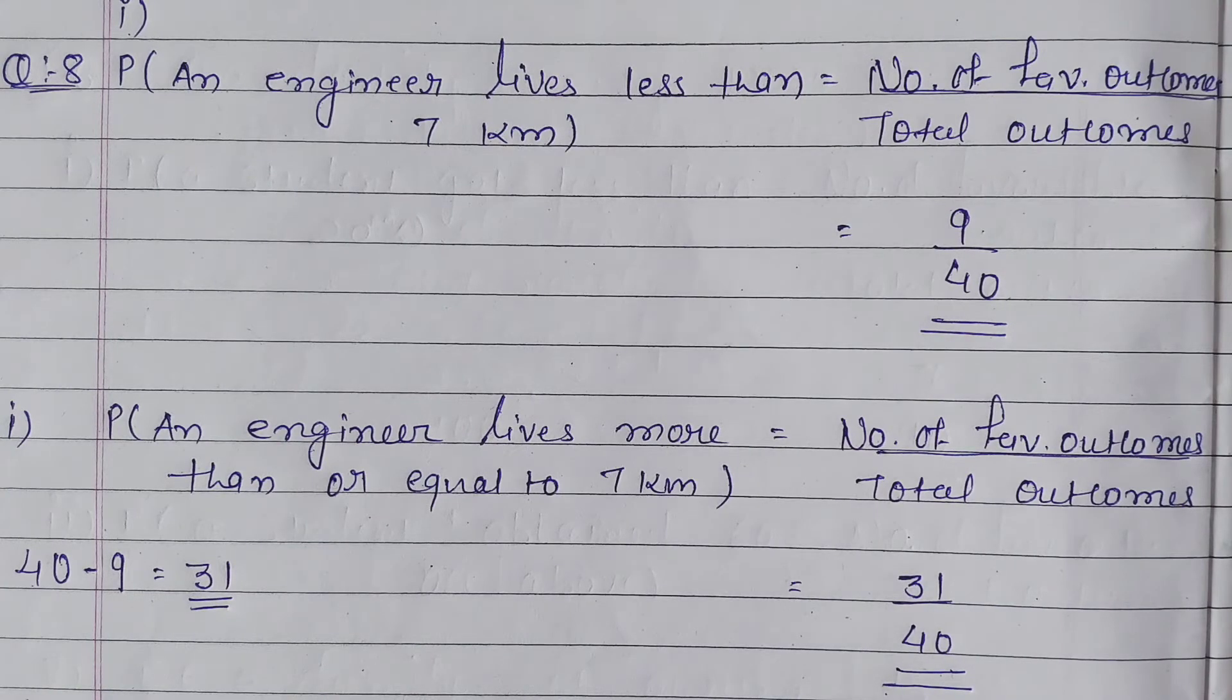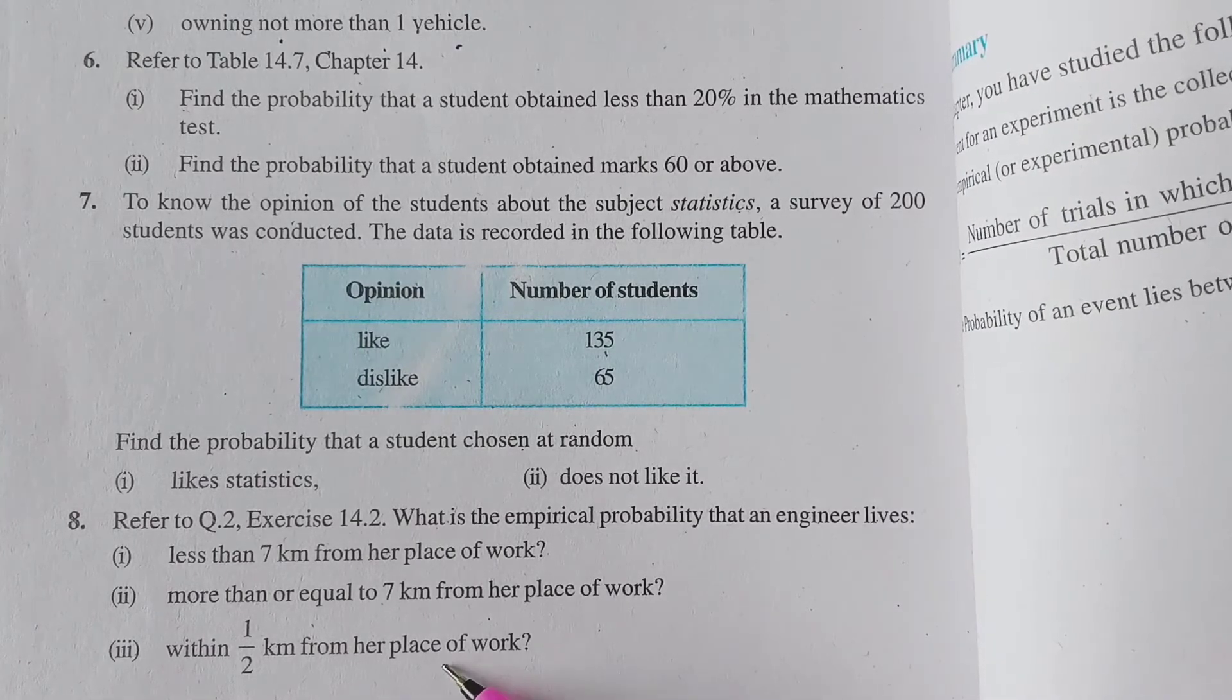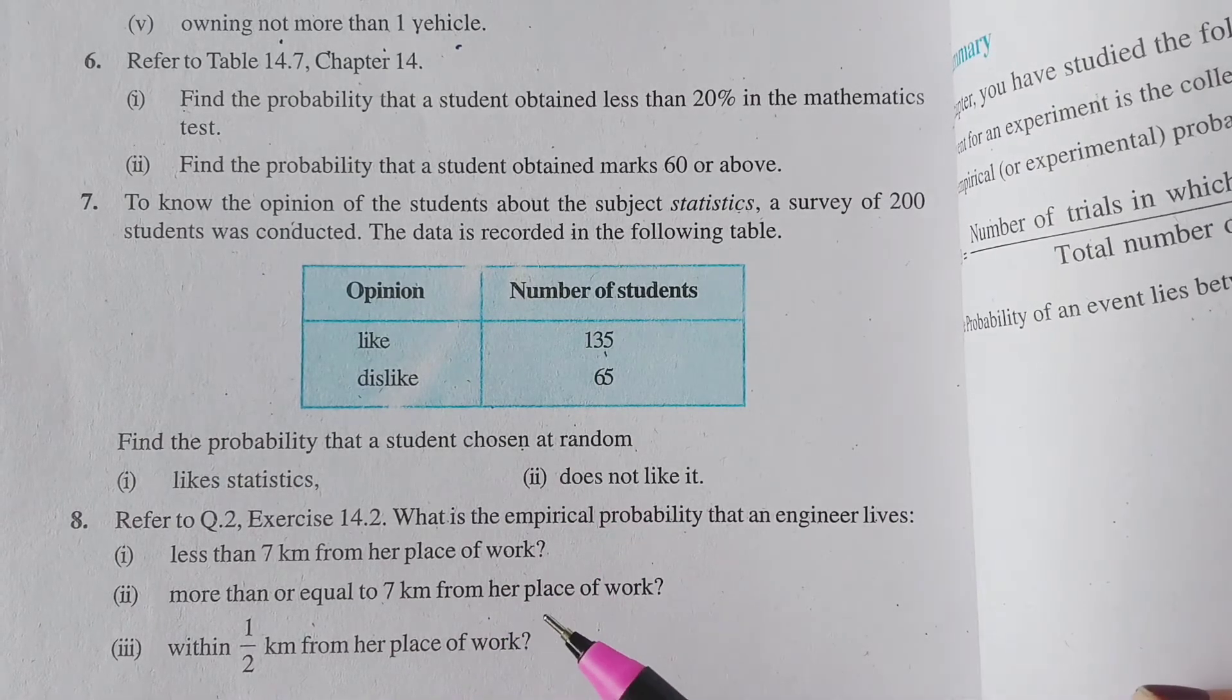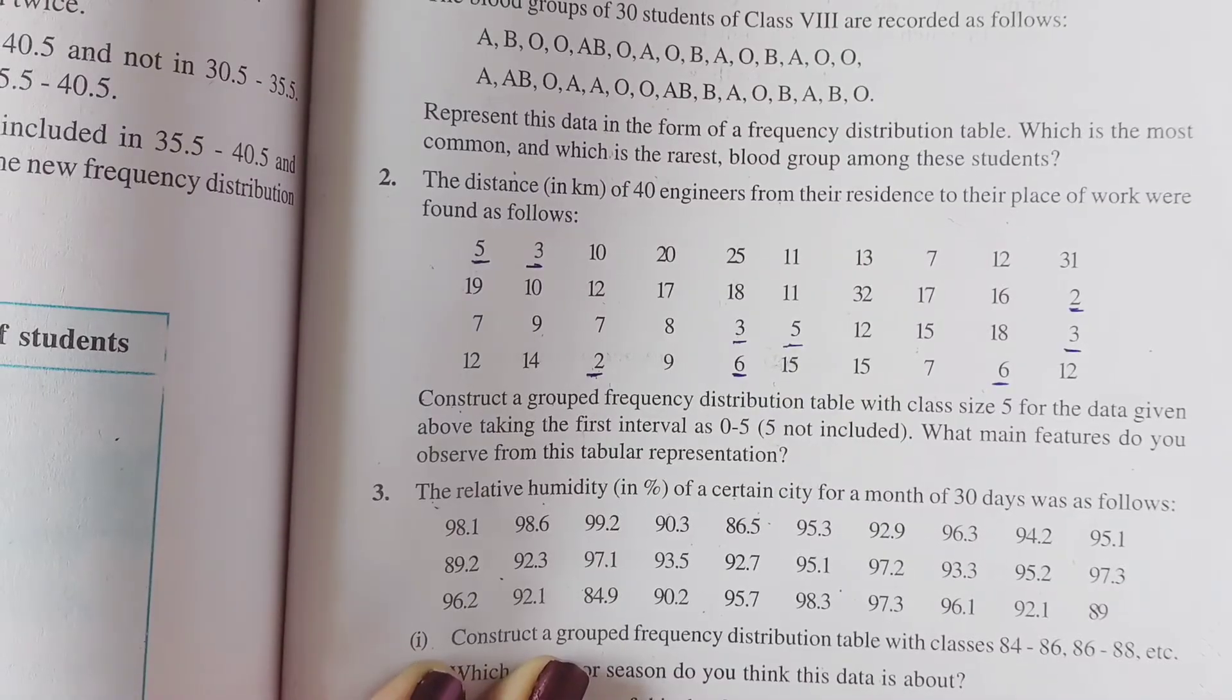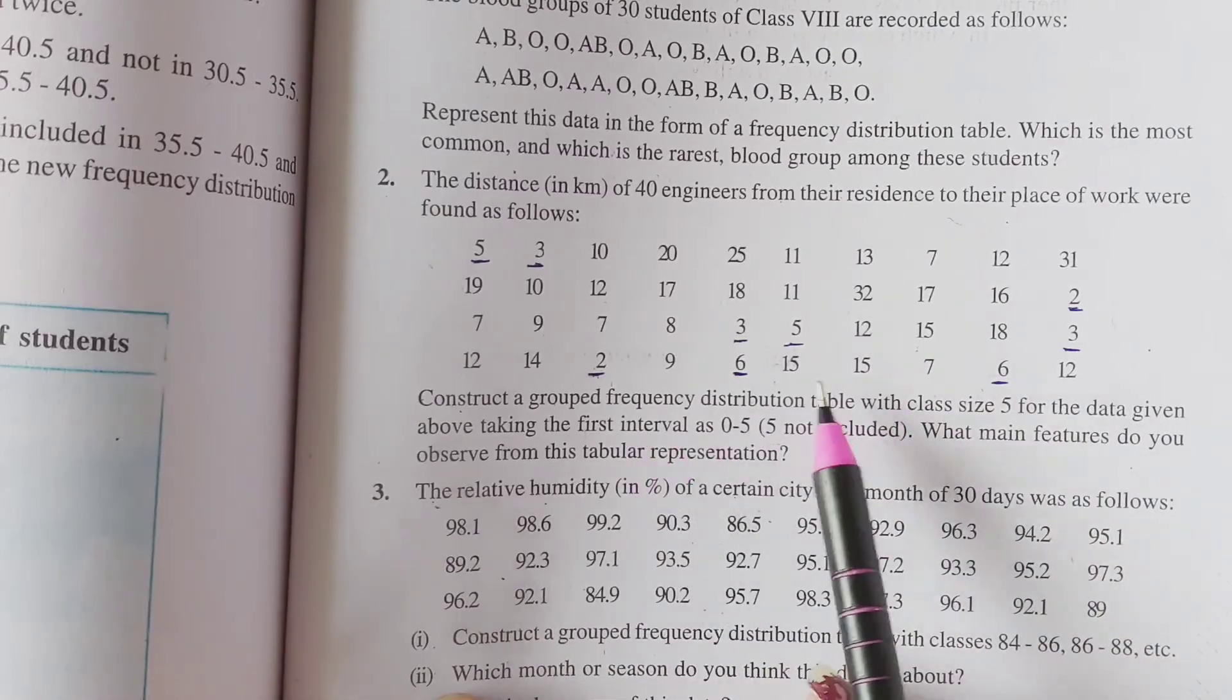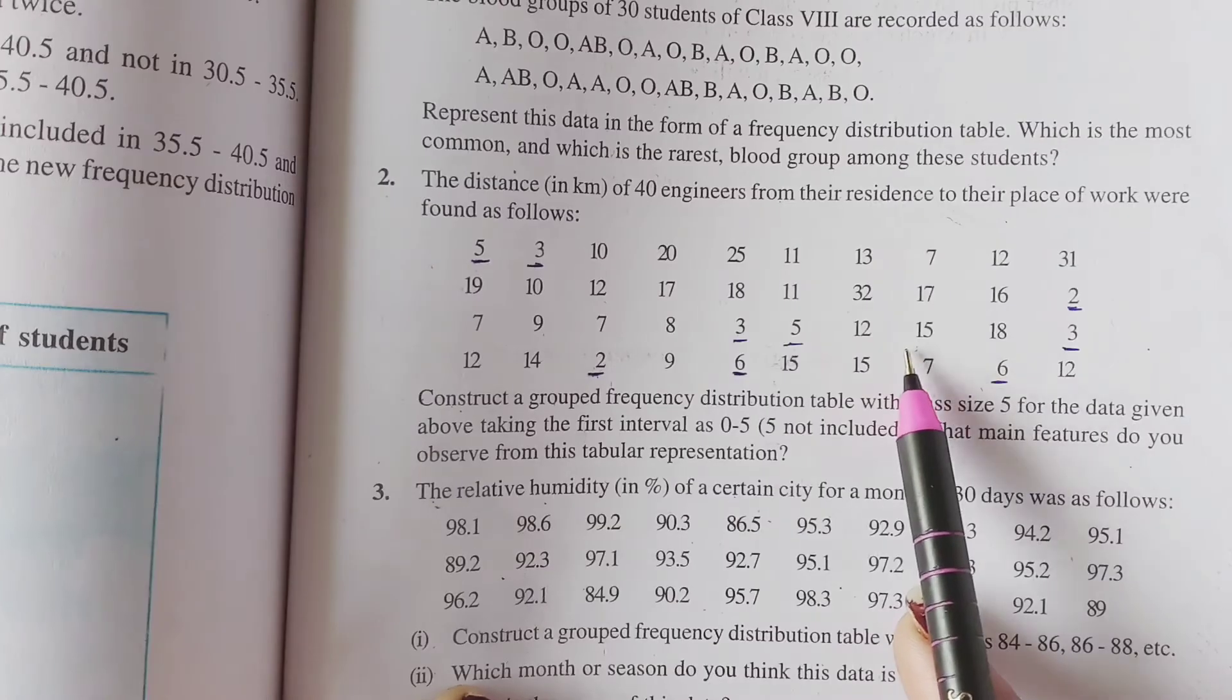Let's see the next probability. The last is within half km from her place of work. Yani yahan ki half km me hi woh apne place, apne place se workplace pe pahunch jayenge. So dekhte hai wiese numbers kitnay hai aapko given? In this table you can see here, there is no engineer whose distance is half a kilometer or under it. All the numbers are 2 kilometers up.